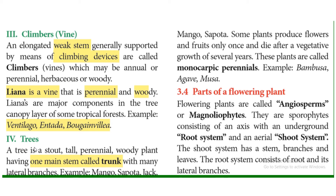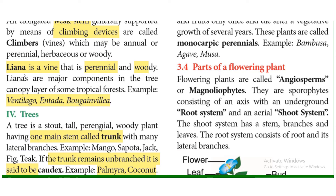Trees are stout, tall, perennial woody plants. They grow really large with thickness and a strong woody nature. Trees have a single main stem called the trunk, with branches. Examples include mango, jackfruit, fig, and chiku (sapota).